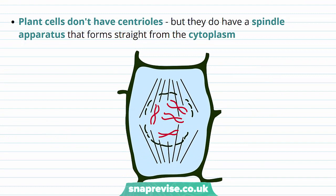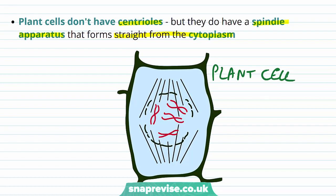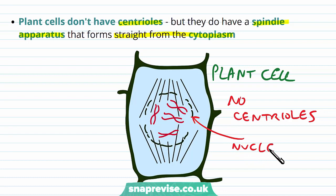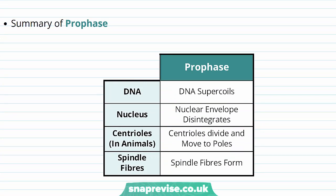In plant cells, there are no centrioles. A spindle network still forms but arises directly from the cytoplasm. In a plant cell about to divide we still have the same stages, but no centrioles — the spindle fibers form from the cytoplasm and the nuclear membrane still breaks down. To summarize prophase: the DNA supercoils and condenses; the nuclear envelope breaks down; in animal cells the centrioles divide and move to the poles and spindle fibers form; in plant cells the spindle apparatus arranges itself from the cytoplasm.